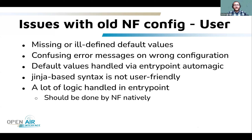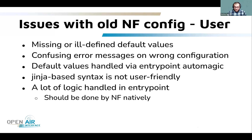From a user perspective, the current configuration has missing or ill-defined default values. When you forget a configuration, sometimes it throws an error, sometimes it just takes any value. Error messages are confusing — often just 'parse error' without indicating where the problem is. We do have default values for Docker Compose handled via the entry point automagic using a Python script with Jinja-based syntax, but it's not user-friendly. We decided that this logic should be handled by the network function natively.